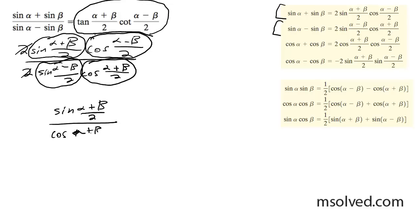Sine (α+β)/2 times cosine (α-β)/2, and then sine (α-β)/2. So this is your cotangent and this portion right here is your tangent.